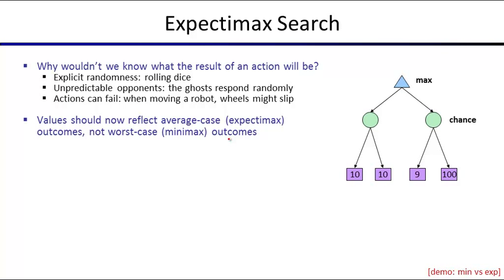How do we run search in this expectimax formalism? We assume rolling dice here, but in reality it doesn't have to be rolling dice. We build a model with which we do computation. It could be ghosts that just don't act optimally, or a player you're playing against that will sometimes just make a dumb move, and you might want to anticipate that.